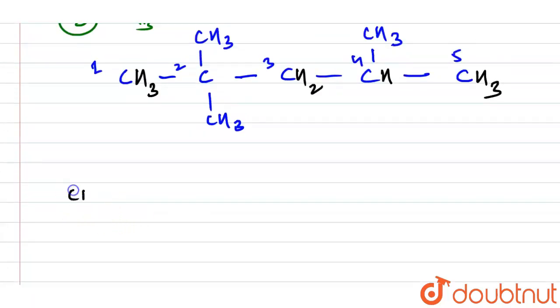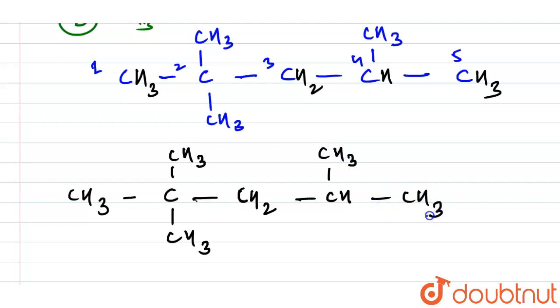So let's draw it properly. Here we have CH3-C - sorry, here we will not have the H. Here we have C with CH3 and CH3. Here we have CH2. Here we have CH. Here we have CH3. So this is our required structure.